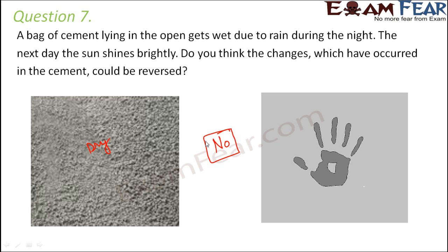With this, we have reached towards the end of this lesson. I hope that this lesson on changes — that is reversible and irreversible changes — would have helped you. Just try observing various types of change that happen around you and within you. For example, your hair grows, your nails grow, your height increases. A lot of changes happen even within your body as well as outside. Try observing those changes and analyze whether they would be reversible or irreversible. I hope this lesson helped you. See you all in the next lesson.